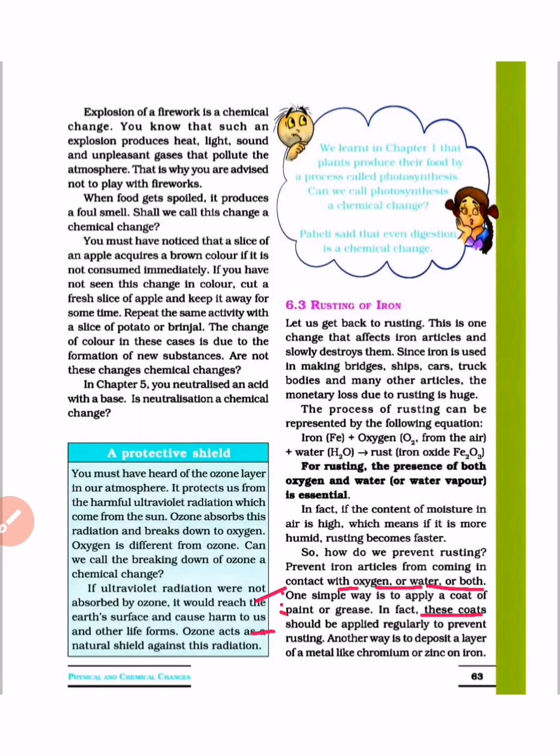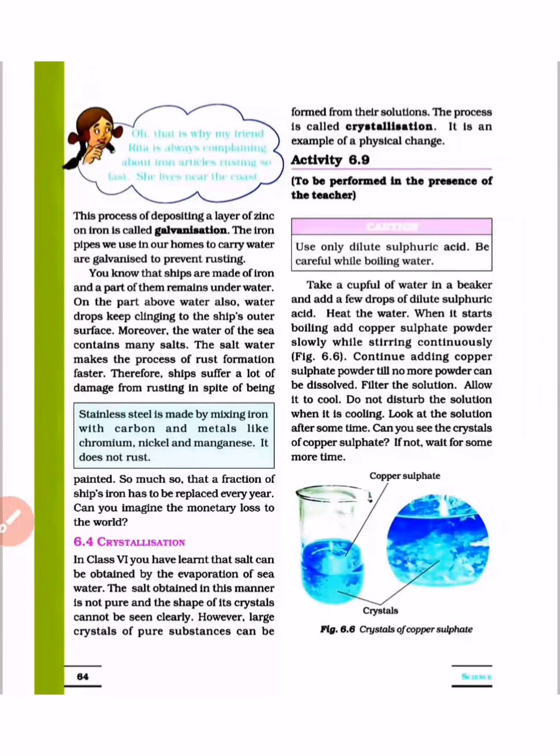Another way is to deposit a layer of metal like chromium or zinc on iron. This process of depositing a layer of zinc on iron is called galvanization. If you use zinc layer on iron, this process is known as galvanization. This is very important.